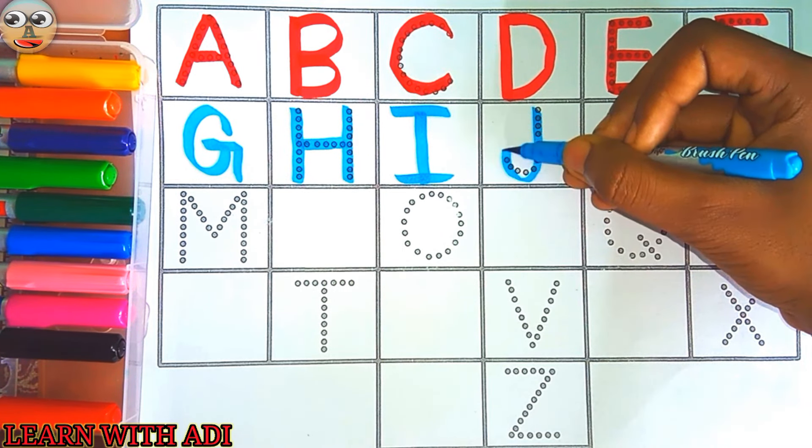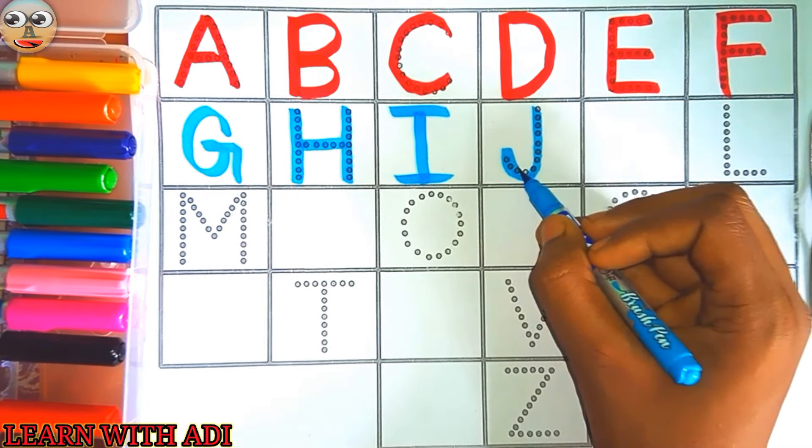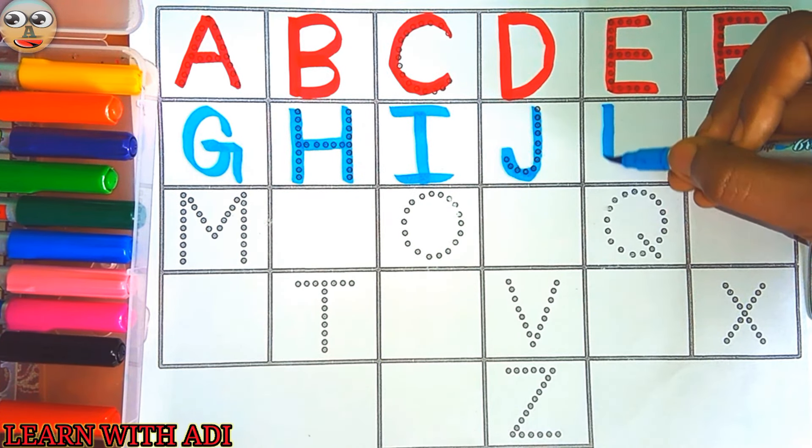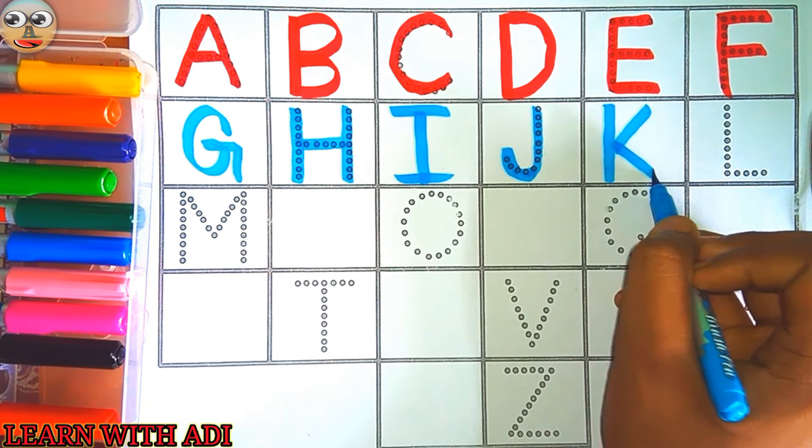J for joker, J for jug, K for king, K for kite.